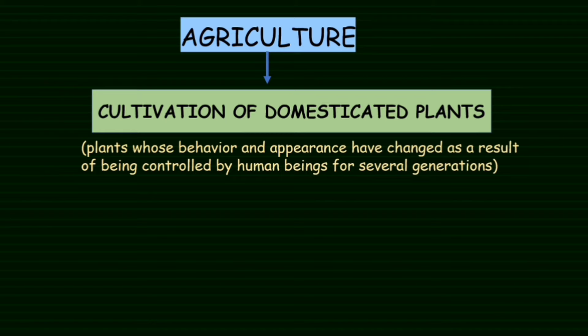Plants whose behavior and appearance have changed as a result of being controlled by human beings for several generations — they are genetically modified over time. People get more benefits: they raise crops and get good revenue. Human beings control and modify plants so that they can benefit from them.